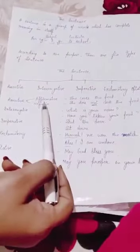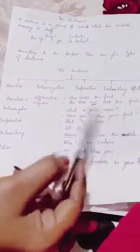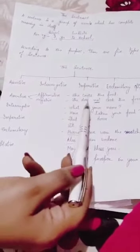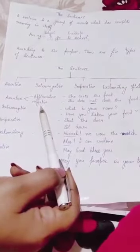For example, she cooks the food - affirmative sentence. She does not cook the food - negative sentence. The sentence with the word not is negative sentence.